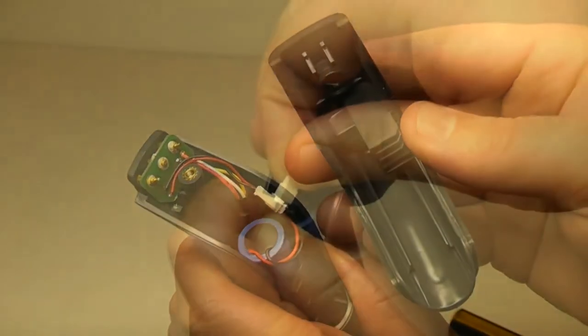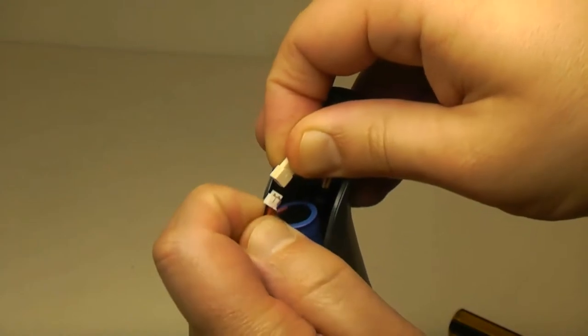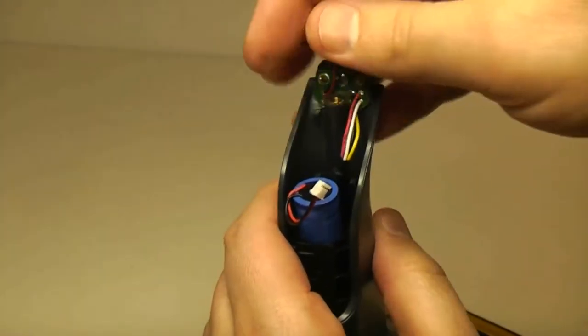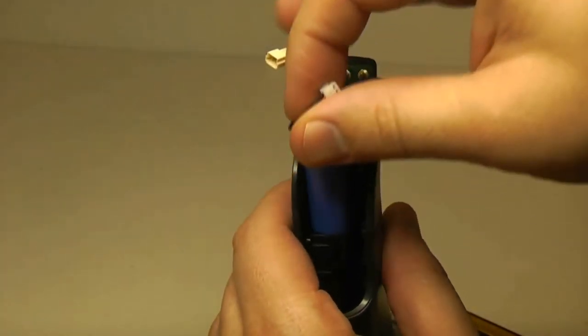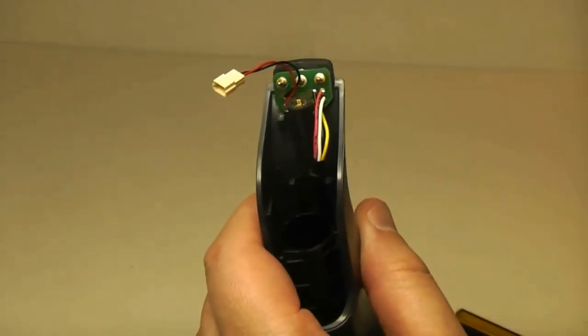Now locate the two pin battery connector and disconnect it by pulling on the leads of each connector. Pull out the battery and replace it with the new one.